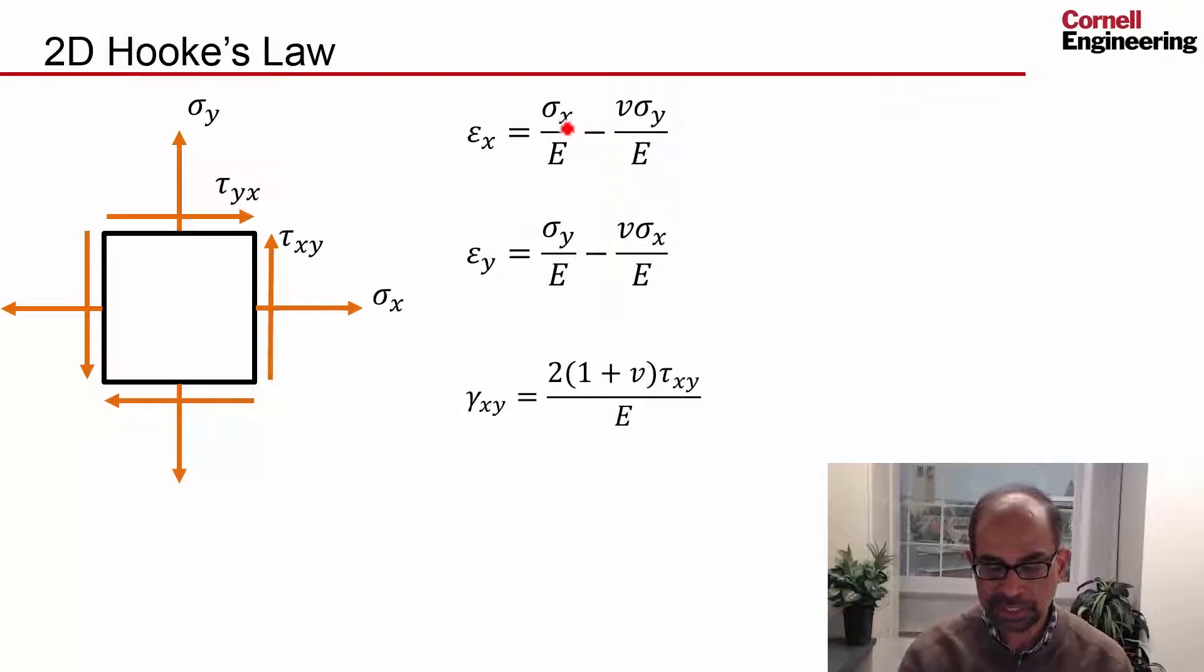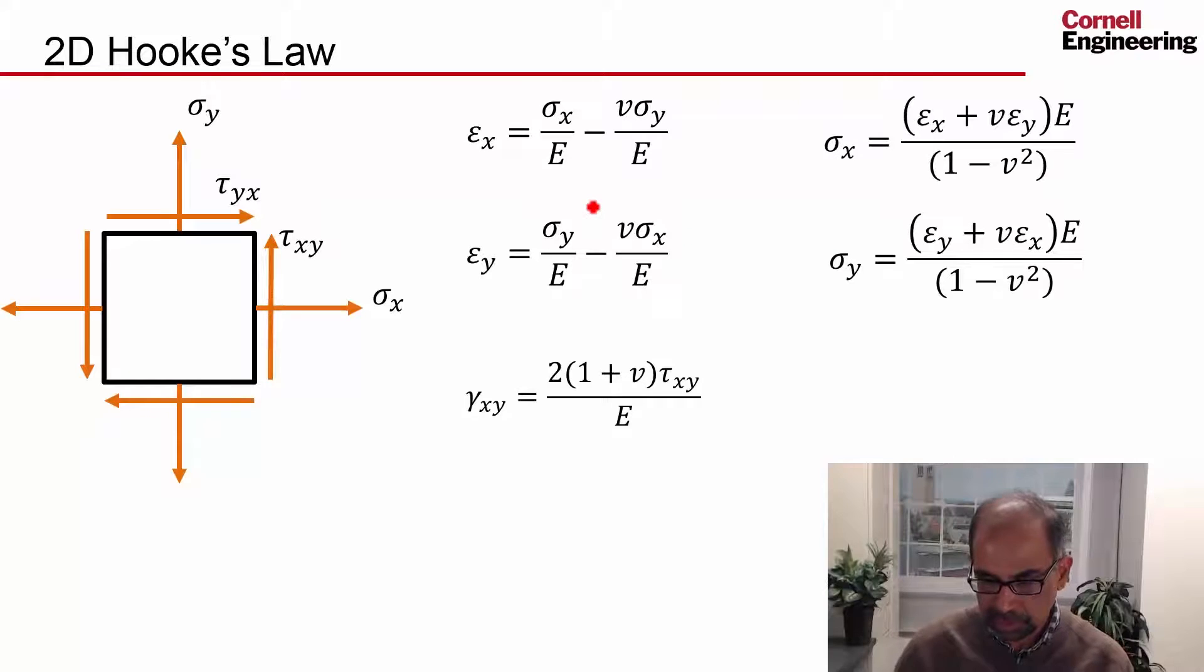One can invert these equations and write expression for the stresses in terms of the strains rather than vice versa. When we write expression for the stresses in terms of the strains, that's called the stiffness form. For the shear stress, you just need to take this factor to the left hand side.